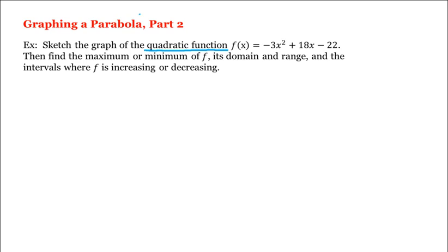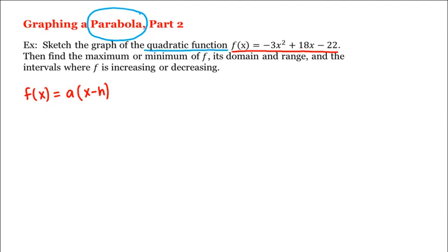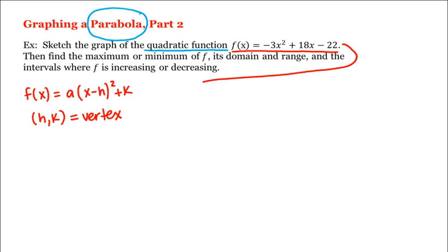To sketch the graph of a quadratic function or a parabola, we plot the vertex and a few points on either side of it. Our quadratic function is written in standard form, and what we need to do is convert it to vertex form, that is f(x) = a(x - h)² + k, where (h, k) is the vertex.